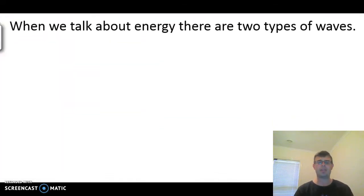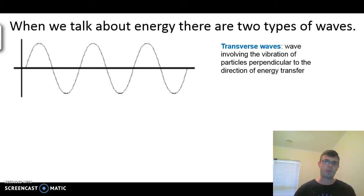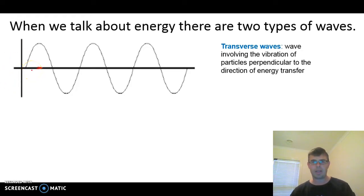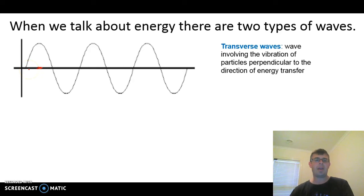When we talk about energy, there are two different types of waves. We've got our transverse waves, which are waves involving the vibration of particles perpendicular to the direction of the energy transfer — which is basically the waves you see at the ocean. So when we're talking about a transverse wave and perpendicular, there's an easy way to remember the name. If we look at this graph, we've got a line going through the center — imagine that's the ocean when it's dead flat — and then we've got a wave moving through it.